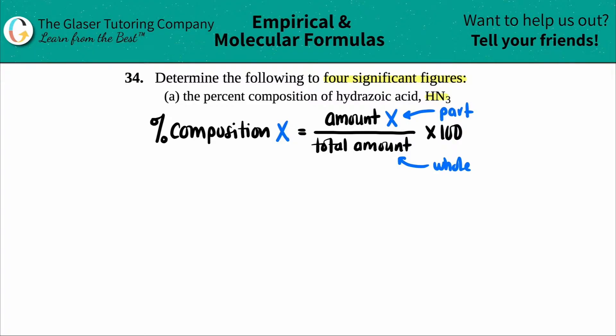Now in this case, they just say find the percent composition. So they actually want you to find both answers for hydrogen and nitrogen. We're going to do it based off of the molar masses on the periodic table since they didn't give us any other numbers.